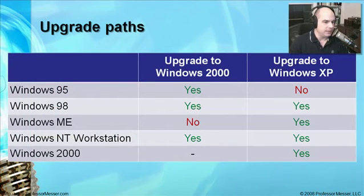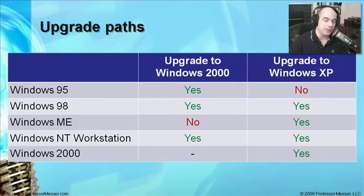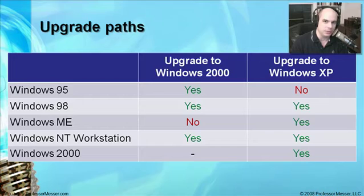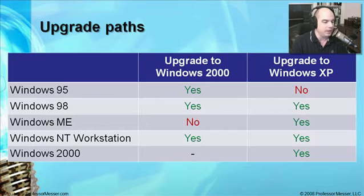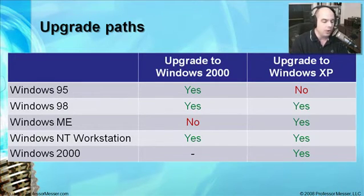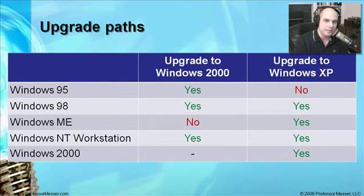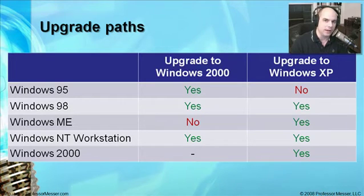Let's start by discussing upgrade paths. Let's say you're running Windows NT, Windows 95, or Windows 98, and you're ready to upgrade to something newer — maybe Windows XP. The question is: can you even upgrade? Is this something where you have to completely erase everything on your hard drive and start over, or can you keep your existing documents and configurations and simply upgrade to a new version while leaving everything intact on the hard drive?